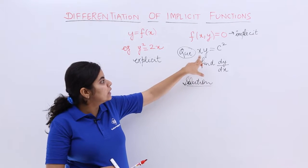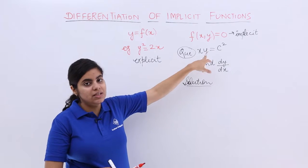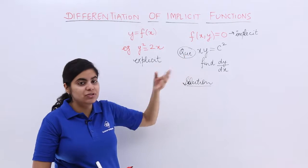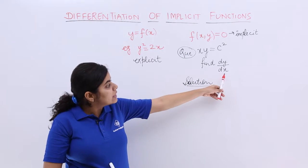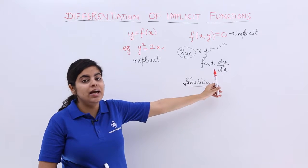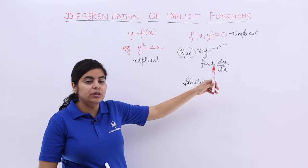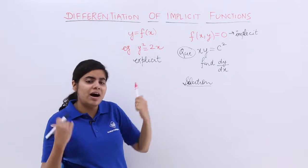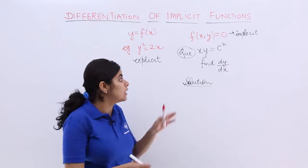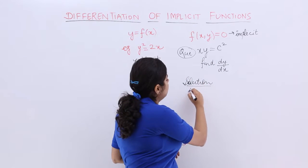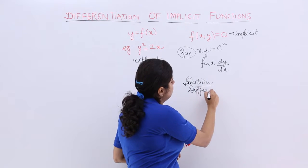As you can see, either you can take the value of y which is c square upon x or you can take the value of x which is c square upon y. But what is needed in the answer? The answer expects us to find the answer of dy by dx. That means I will definitely be differentiating directly.